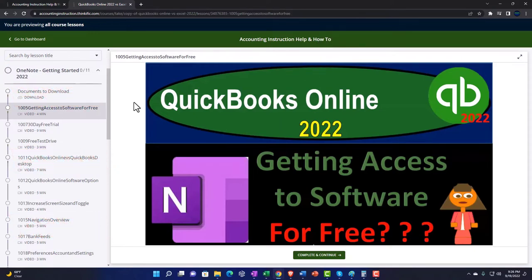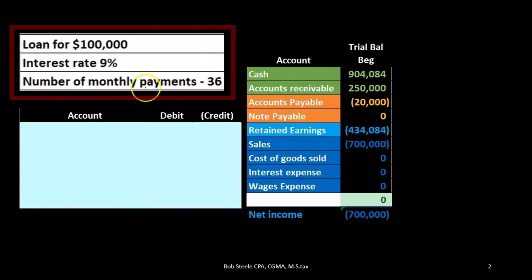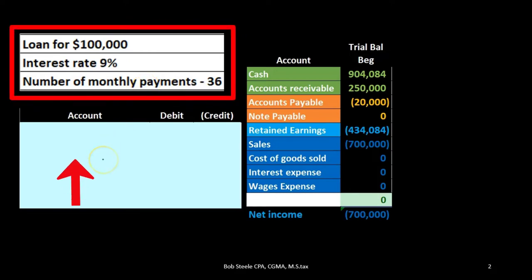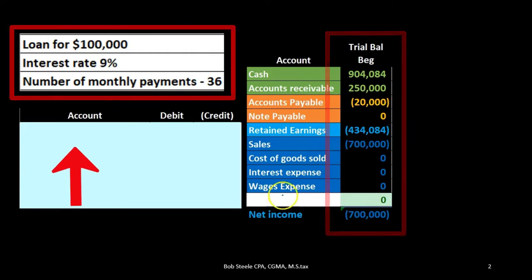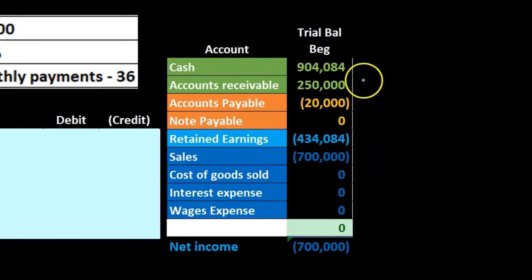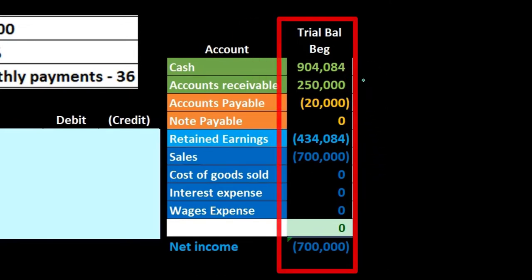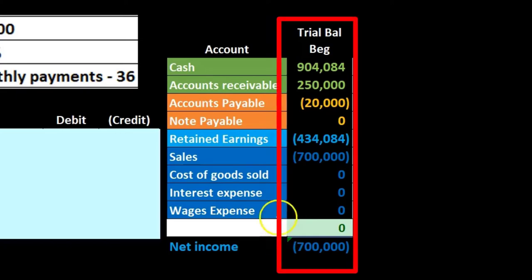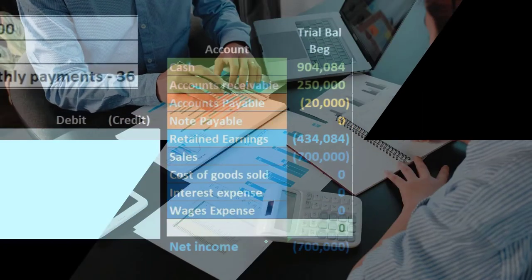Here are the terms we're going to record in our general journal, and then we'll post that to our worksheet. The trial balance is in order: assets, liabilities, equity, income, and expenses. Debits are non-bracketed or positive, and credits are bracketed or negative — debits minus credits equal zero. Net income is currently at $700,000 — income, not a loss — revenue minus expenses.